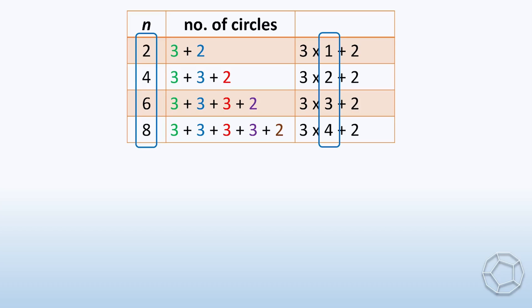Therefore, we get the general formula. When n is an even number, the total number of circles is equal to 3 times n over 2 plus 2. We are almost there.